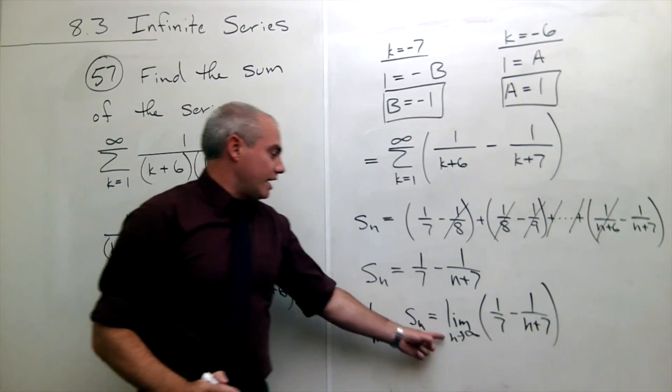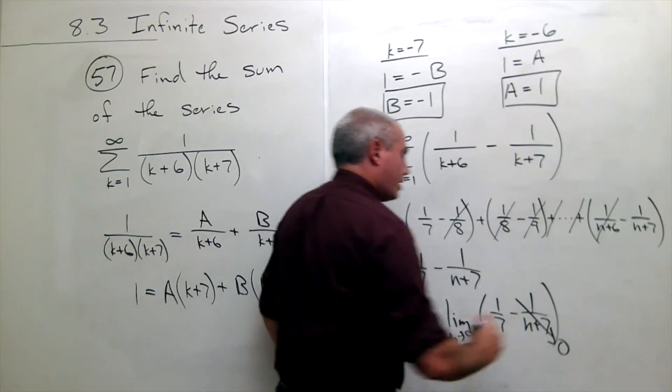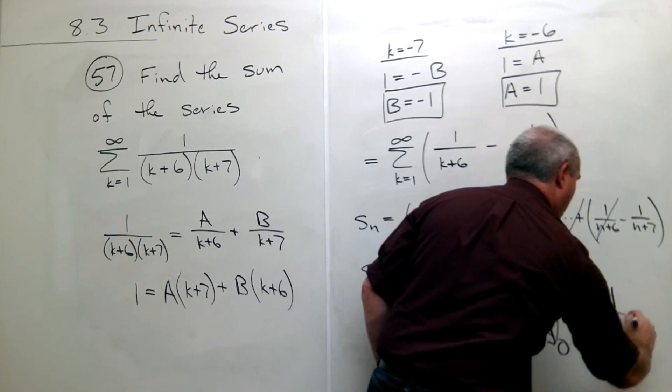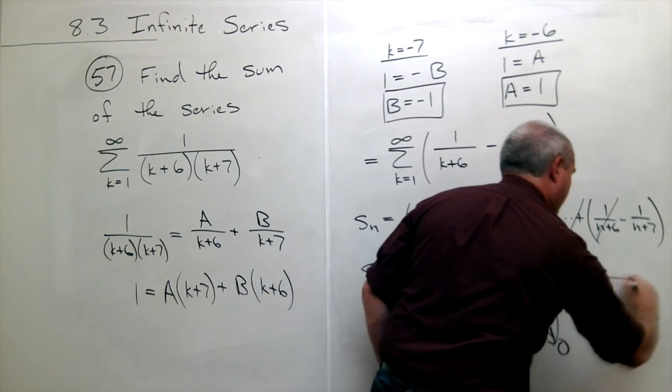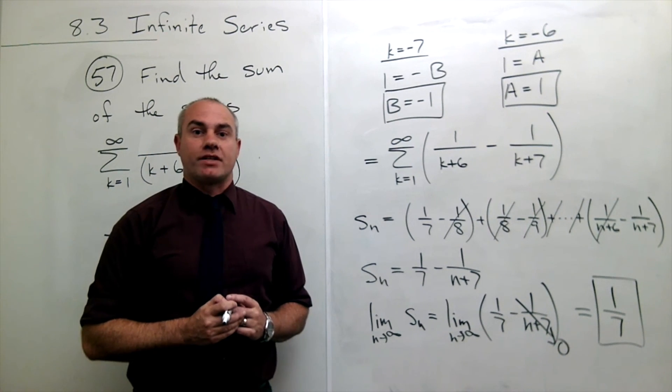And as n goes to infinity this fraction goes to 0 and all I'm left with is 1 over 7. And that's the sum of my infinite series.